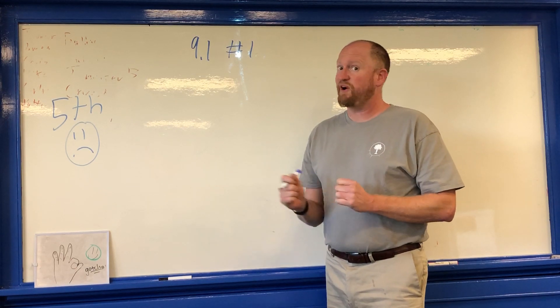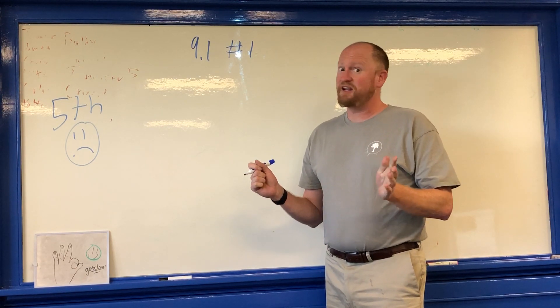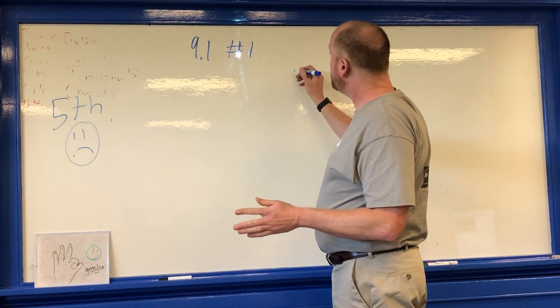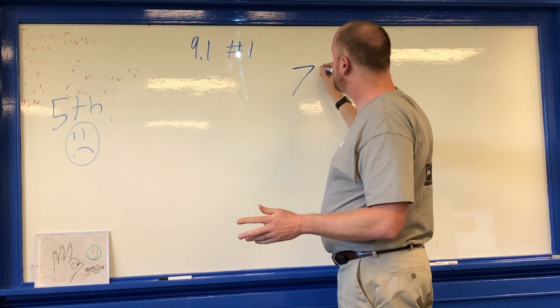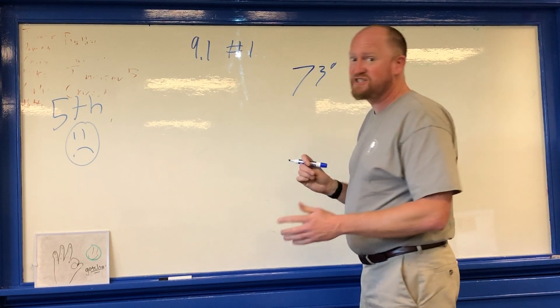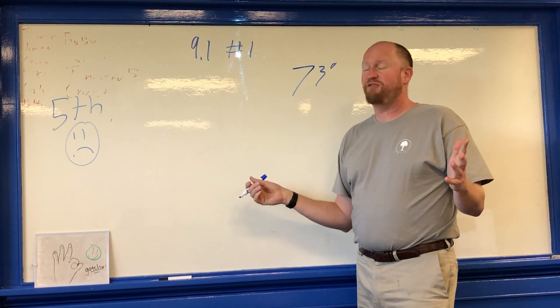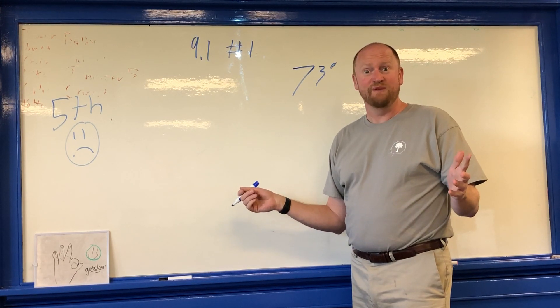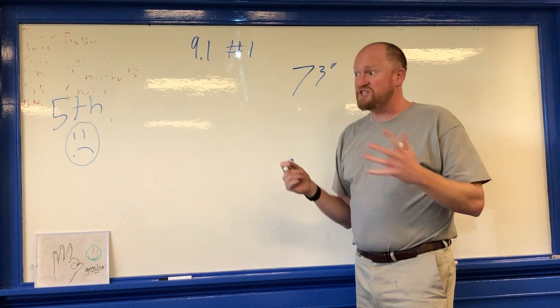Americans use something called Fahrenheit and everybody else doesn't. So I checked my phone and I saw that it said that the temperature in Amani was 73 degrees Fahrenheit. But what if I got a friend coming in from anywhere outside the US? They don't know what that means.